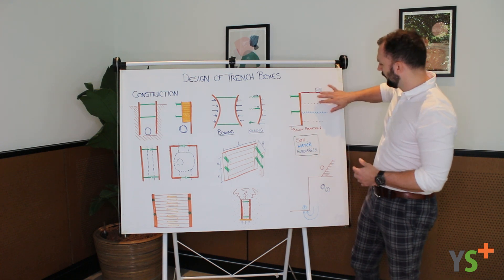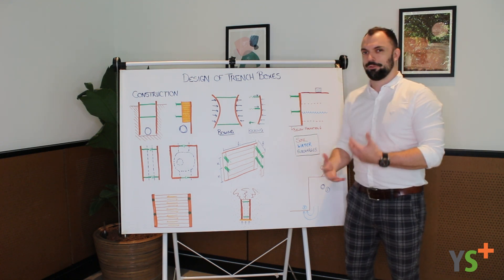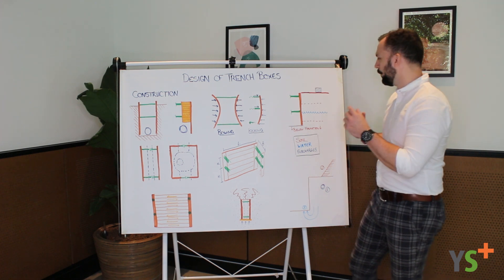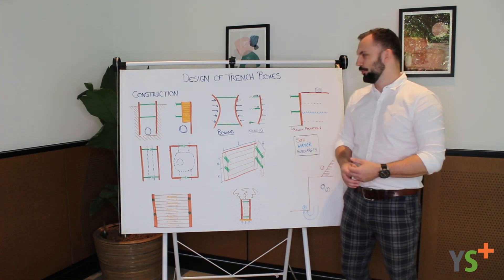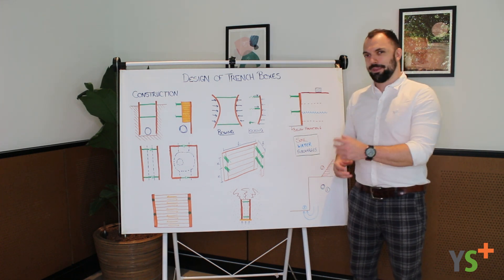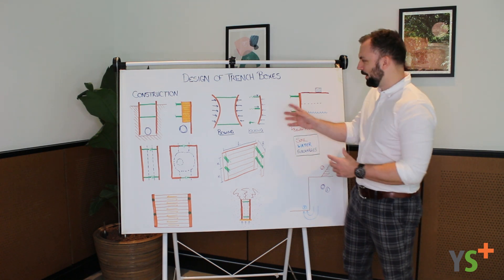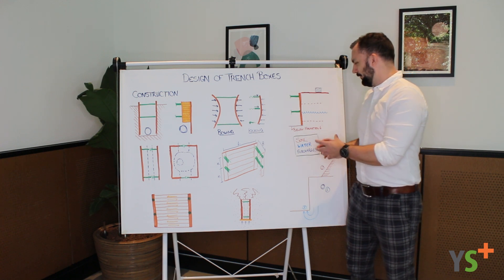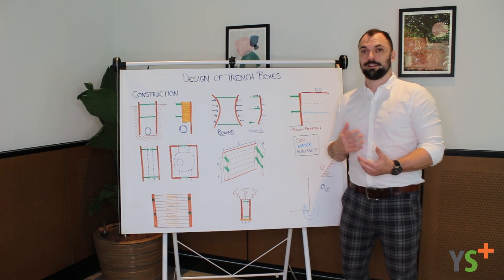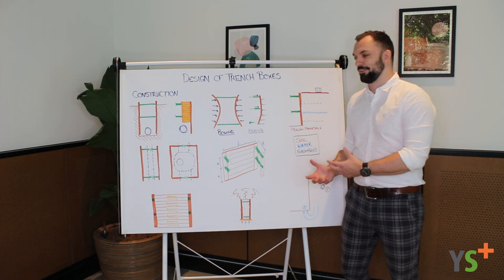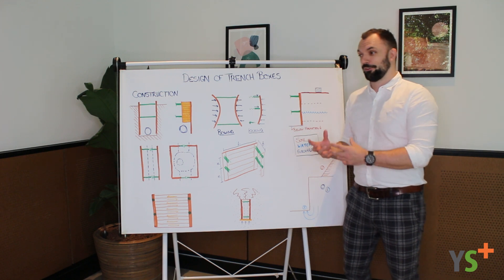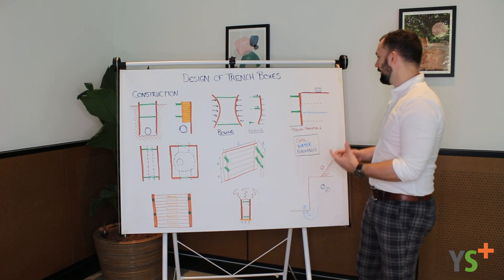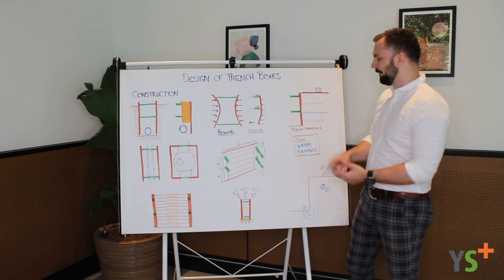So first of all, you've got layers of soil. And depending on what the soil is like, it could be weak ground, it could be strong ground, it could be fairly self-supporting, and that will massively change the amount of pressure that's being applied to the boxes. The Your Solution Plus system deals with that by taking conservative industry-accepted values for certain types of ground.